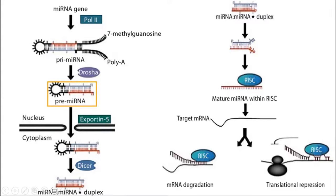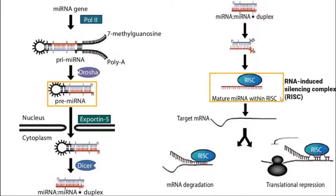Inside the cytoplasm, a lot of different proteins attach themselves to this miRNA, and then this mature miRNA makes a complex with those proteins. This complex is called RISC — the full form is RNA-induced silencing complex.